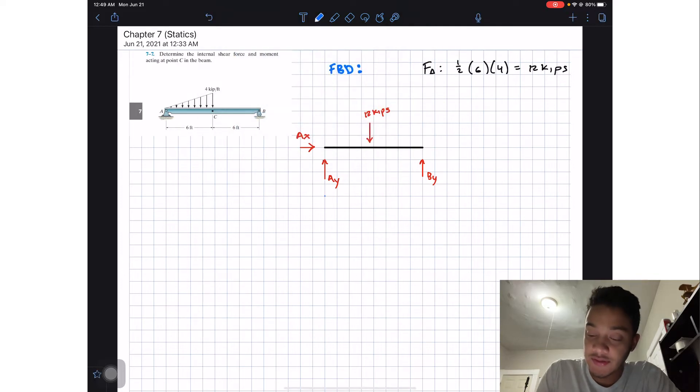All we need to add into this free body diagram is how far away is my 12 kips with respect to point A, which will be two thirds from the smallest side and one third from the longest. So from point A it will be 4 because it's two thirds off my base.